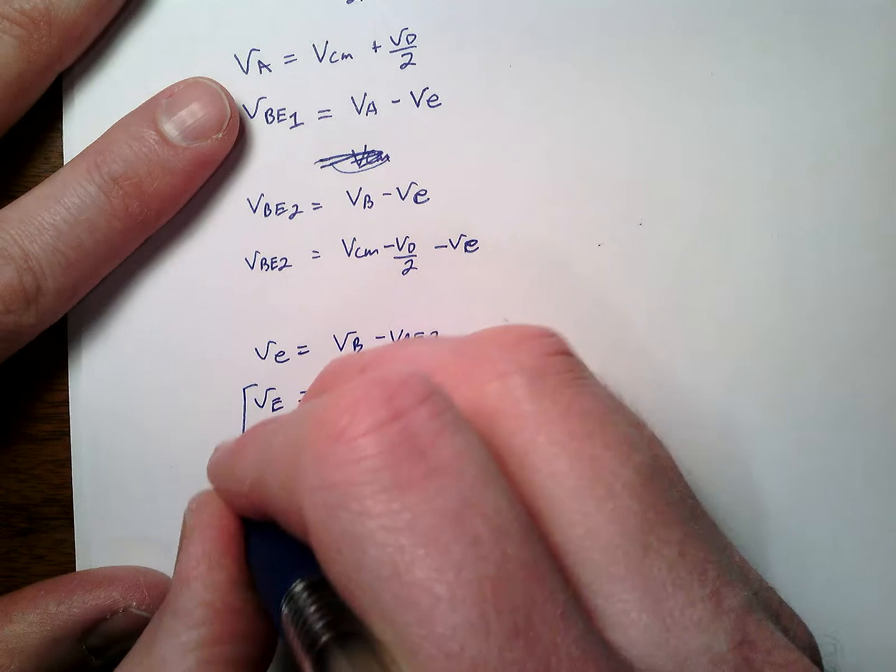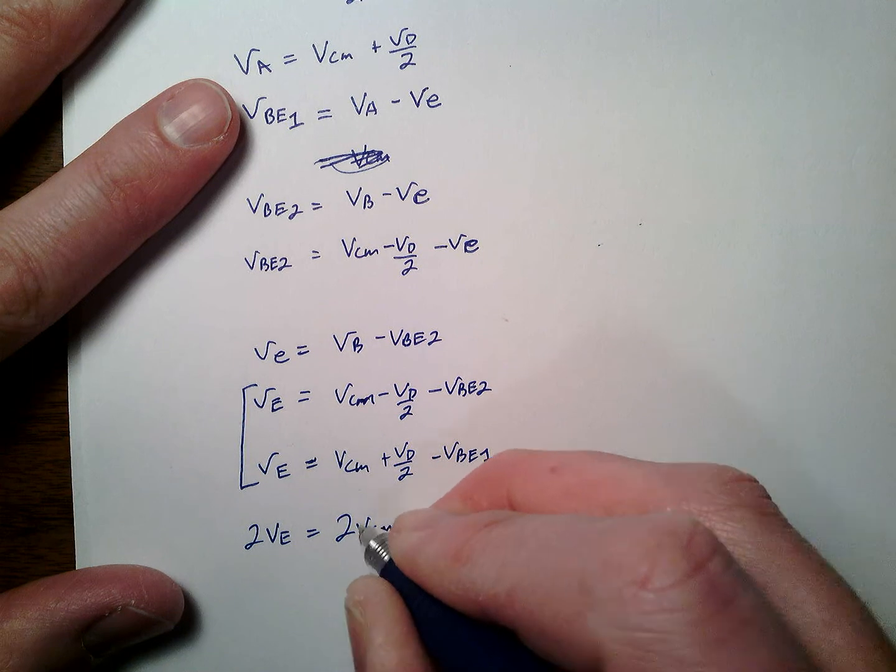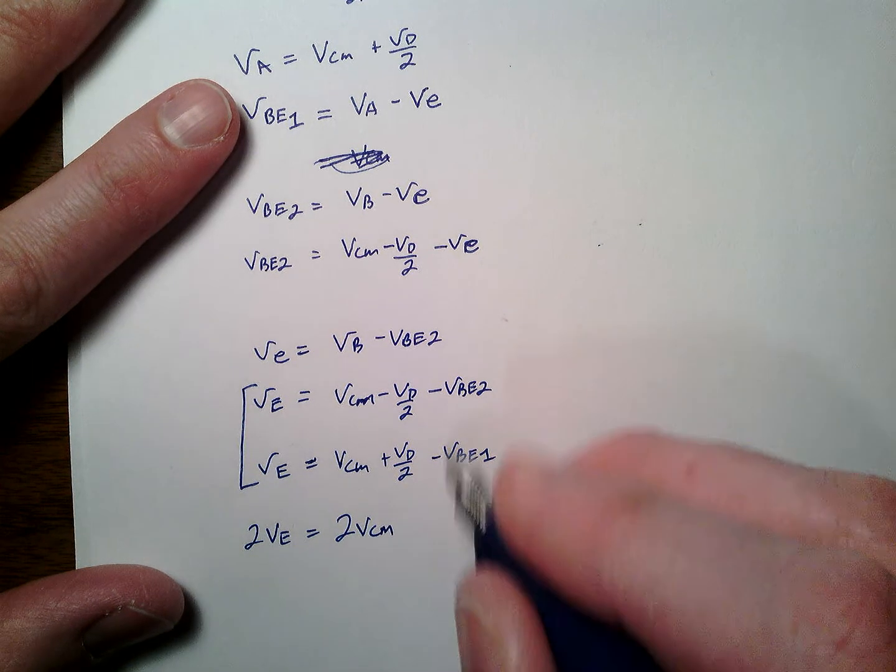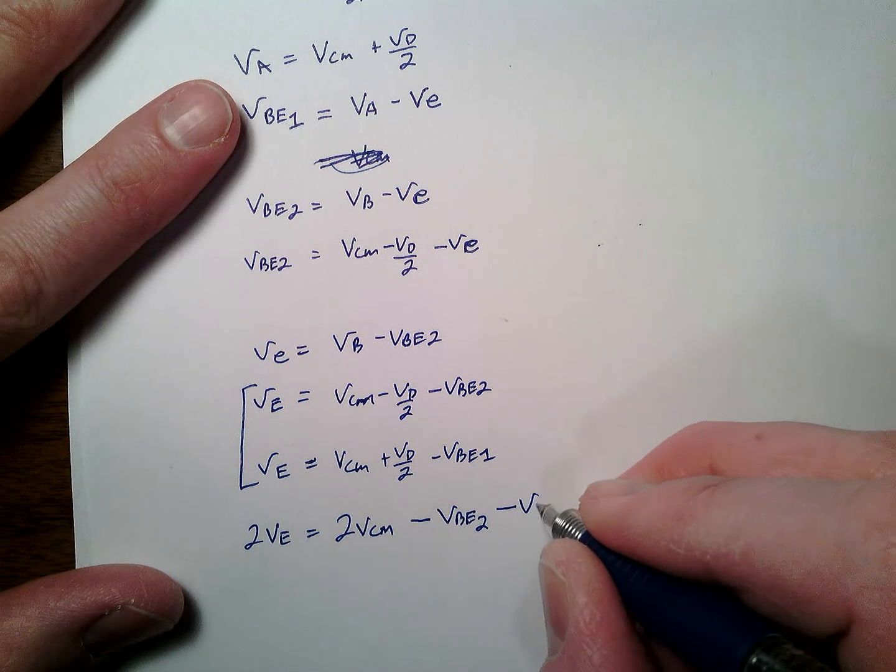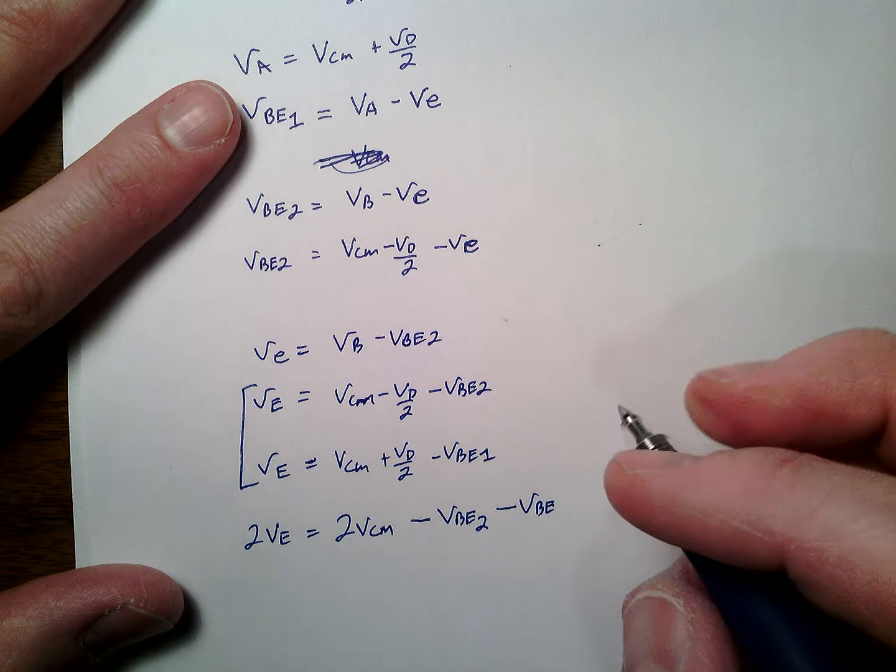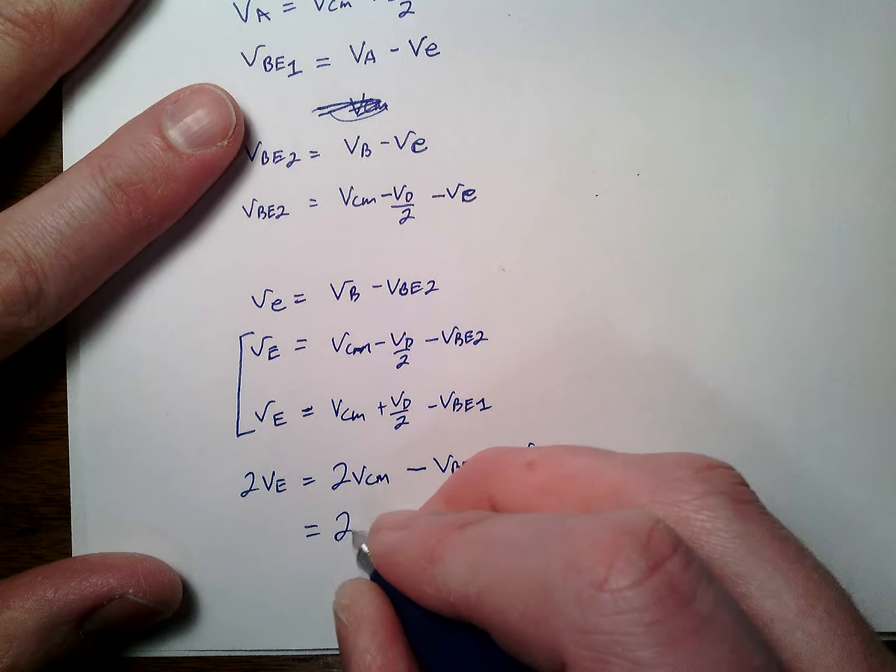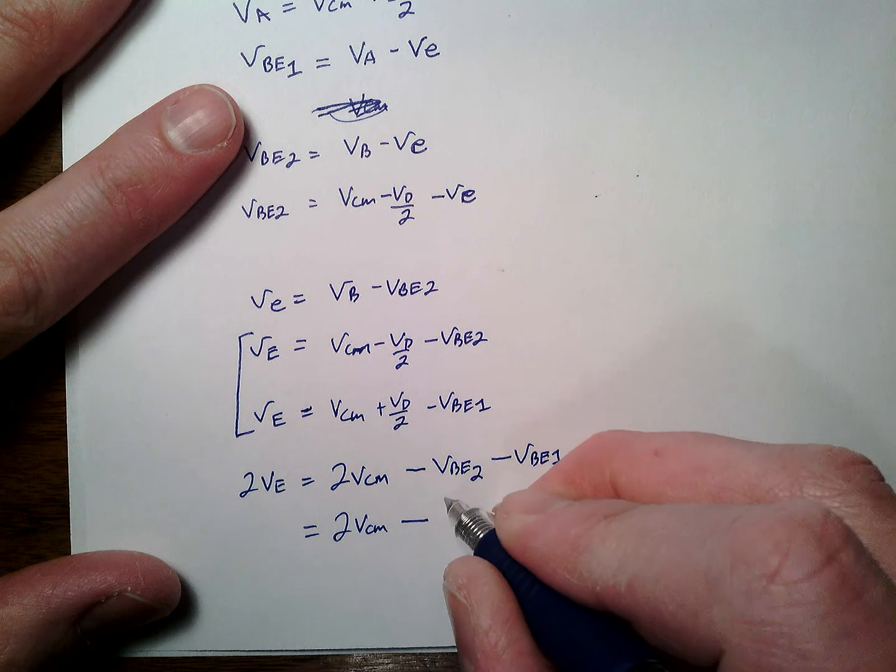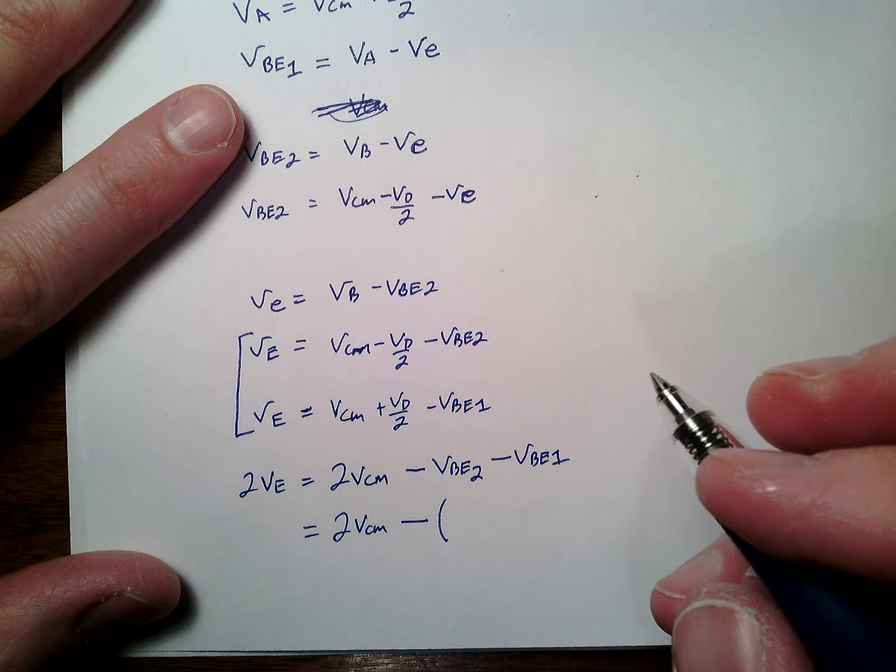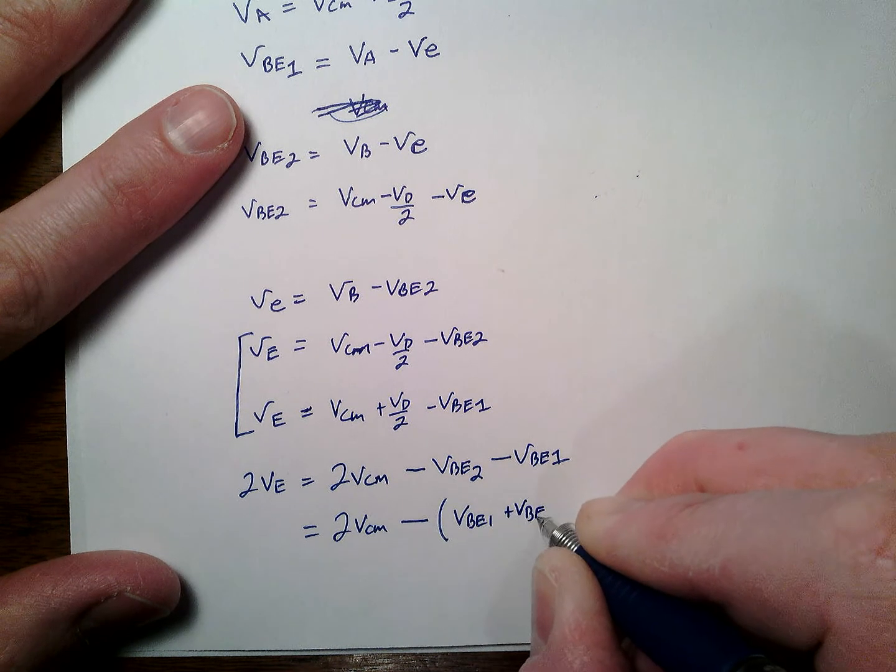Well, watch what we're going to do. We're going to take these two and add them together. I get 2VE is 2VCM. Are you getting excited? These terms go away and I say minus VBE2 minus VBE1. Okay. One more substitution in here, 2VCM minus. Take the minus out and we're going to get, take out the minus, take out the minus. VBE1 plus VBE2.